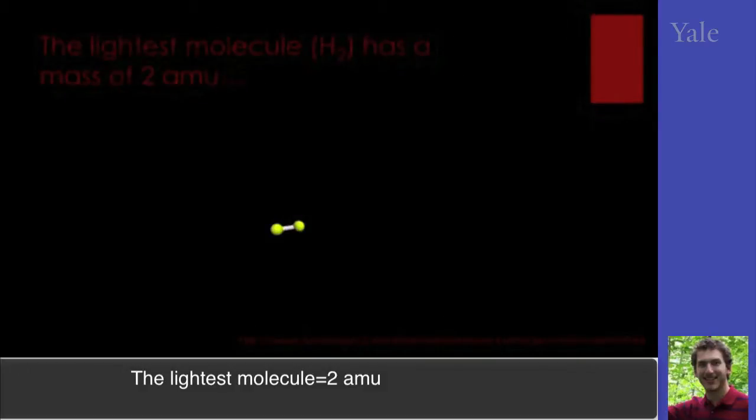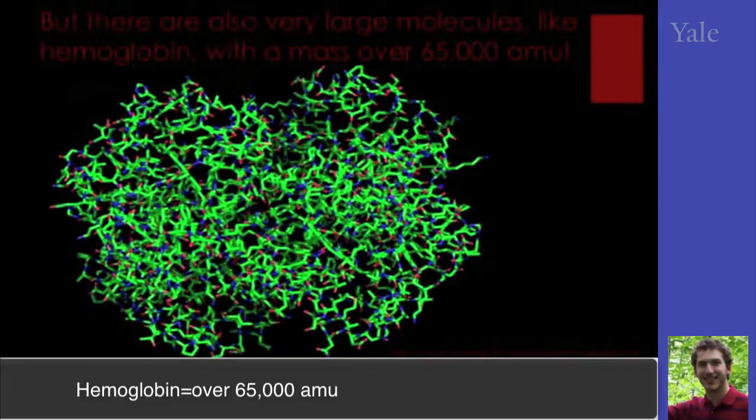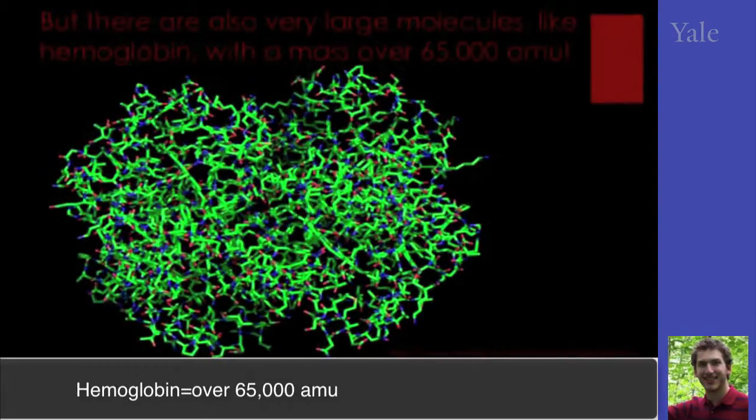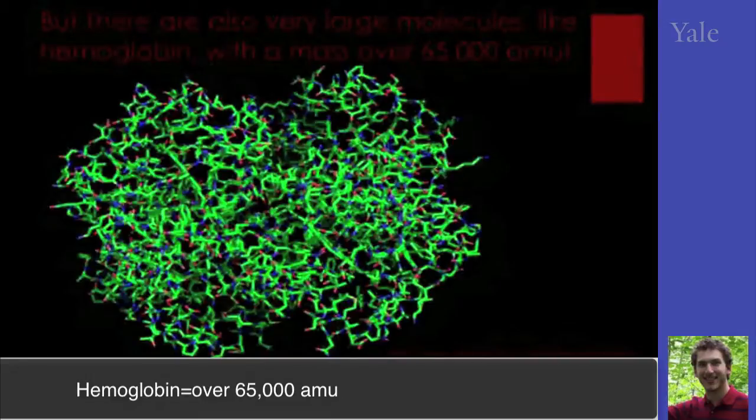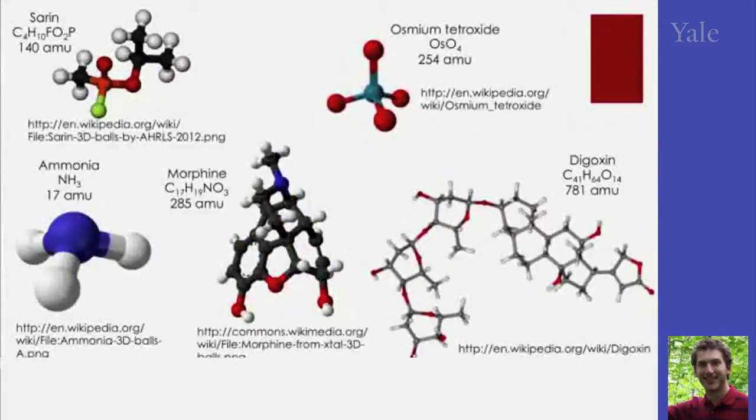The lightest, smallest molecule, dihydrogen, has a mass of 2 AMU. But there are also very large molecules, like hemoglobin, with a mass over 65,000 AMU. But most molecules are between 100 and 1,000.